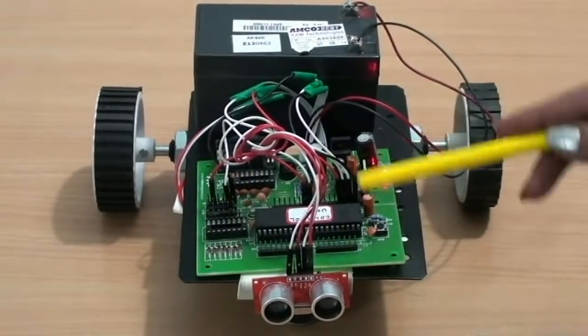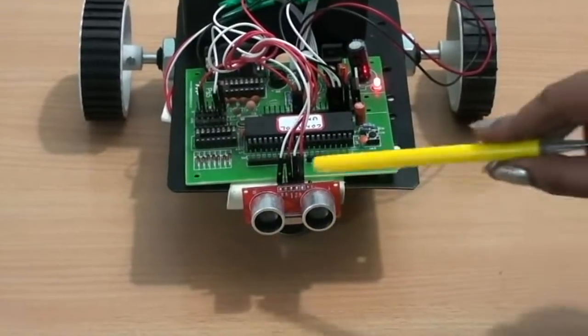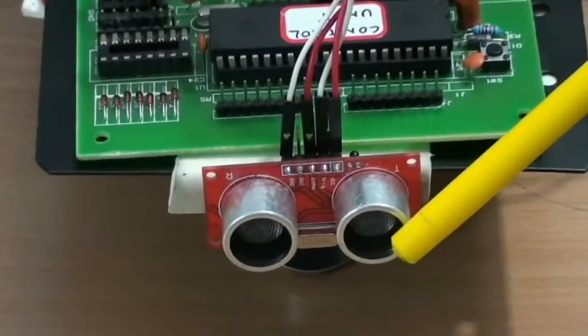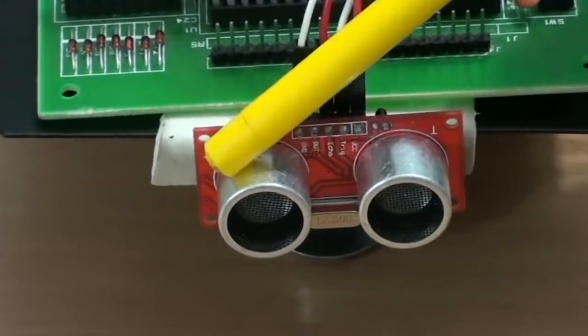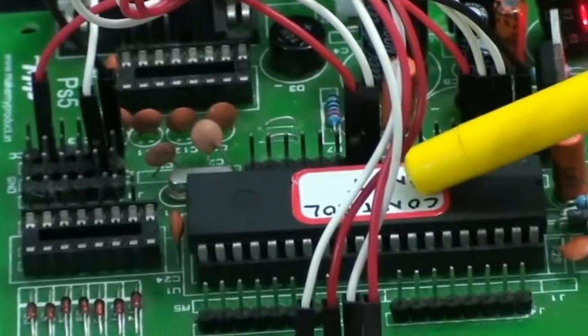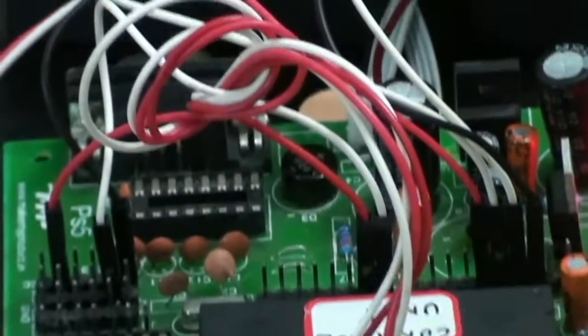The components present in this project are the ultrasonic module, which you can see here, which includes the transmitter and the receiver. And this is the microcontroller, these are the echo pins which are connected.